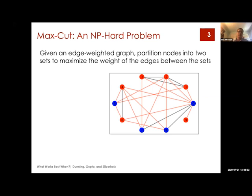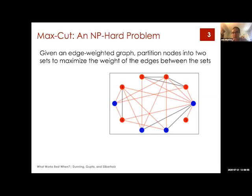In some sense, you take a graph with nodes and edges — the edges can have weights — and you're trying to partition the nodes into two groups. I have the red and the blue nodes here on my slide. The goal is to basically maximize the number of edges that are between the two groups, or if they're weighted, the sum of the edge weights between the two groups. We're maximizing the number of red edges, because the red edges are the ones that go from a red node to a blue node. The black edges are within the same color.